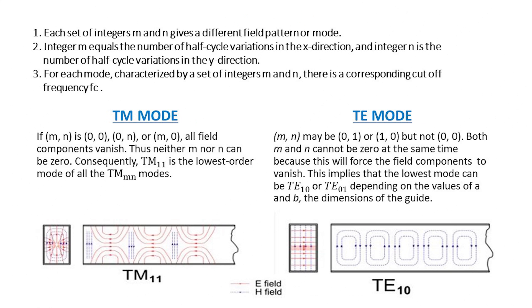Each set of integer m and n gives a different field pattern or mode. Integer m equals the number of half cycle variation in the x direction and integer n is the number of half cycle variation in the y direction. For each mode characterized by a set of integer m and n, there is a corresponding cutoff frequency.